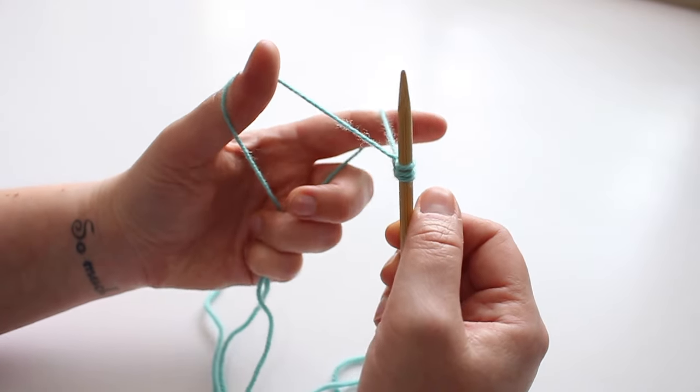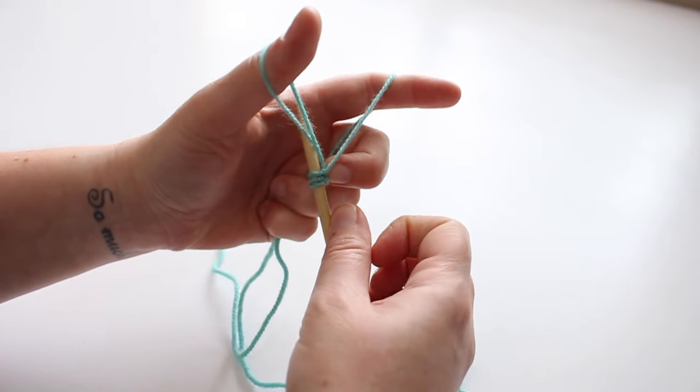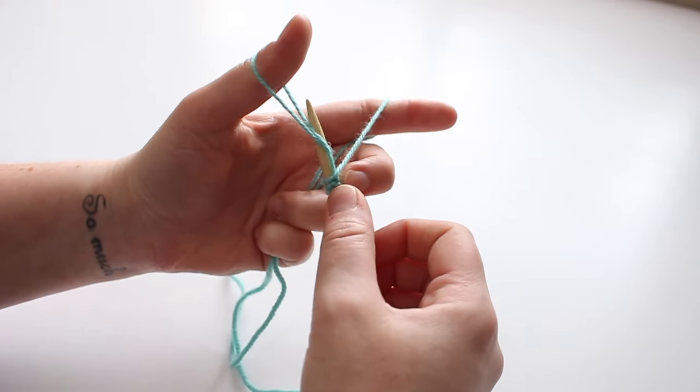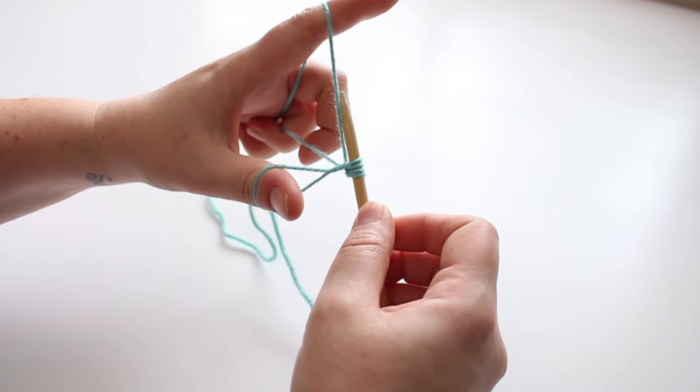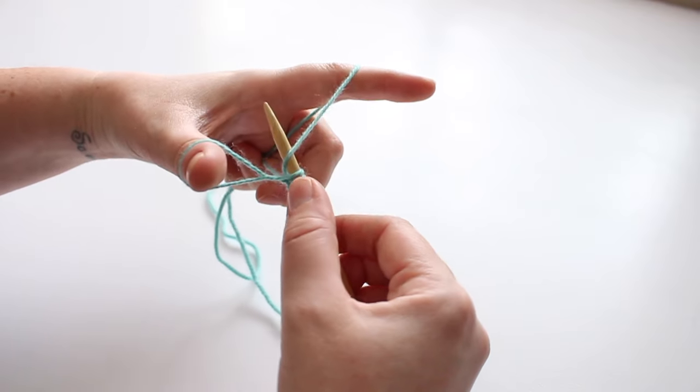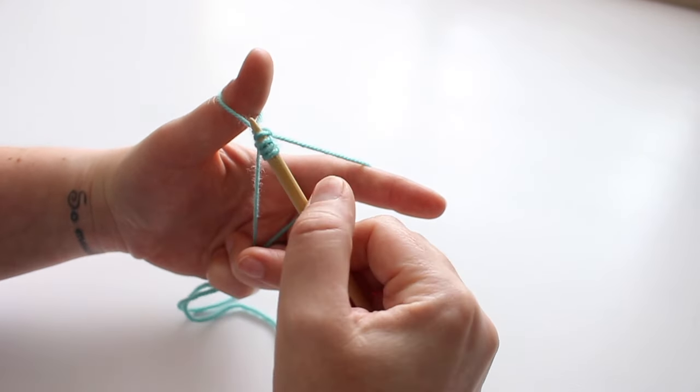One more time, we get our gun shape ready. We go under both loops on our thumb and back between them. We turn our hands and bring the needle behind the yarn over our pointer and through the tiny triangle.